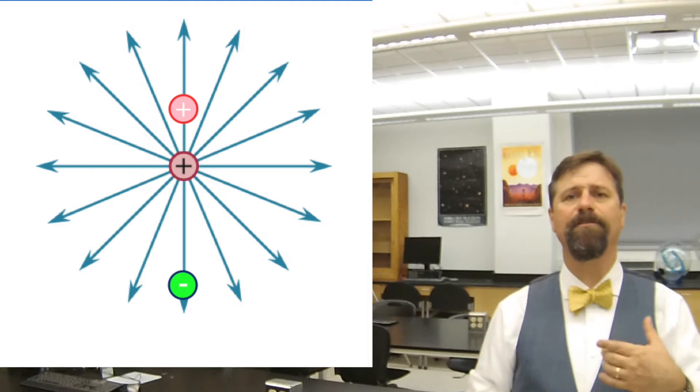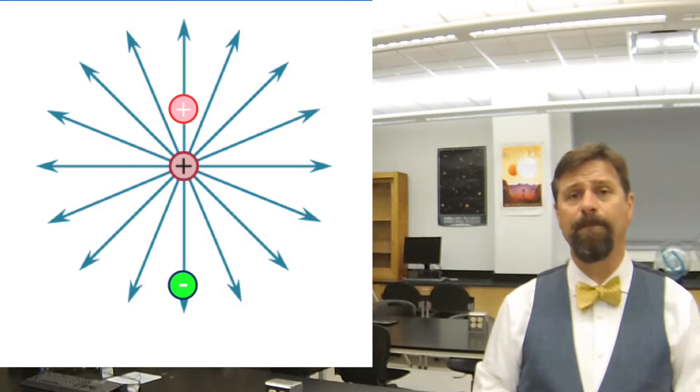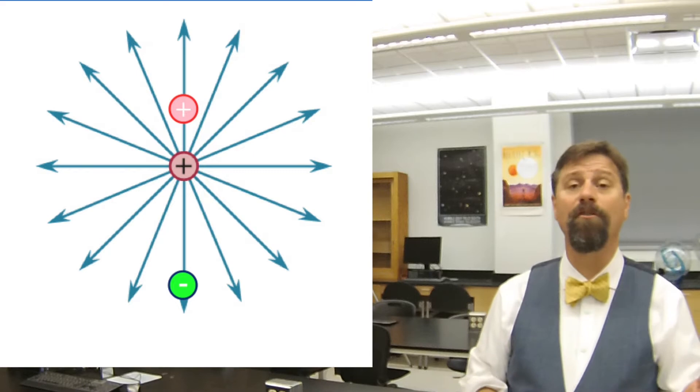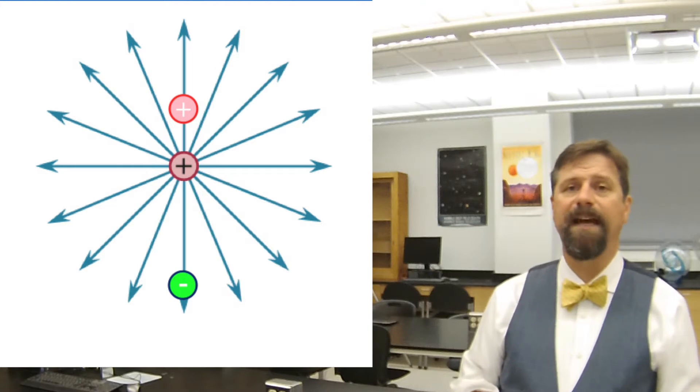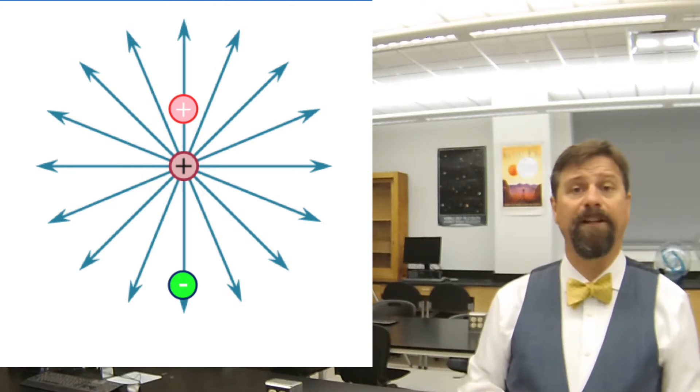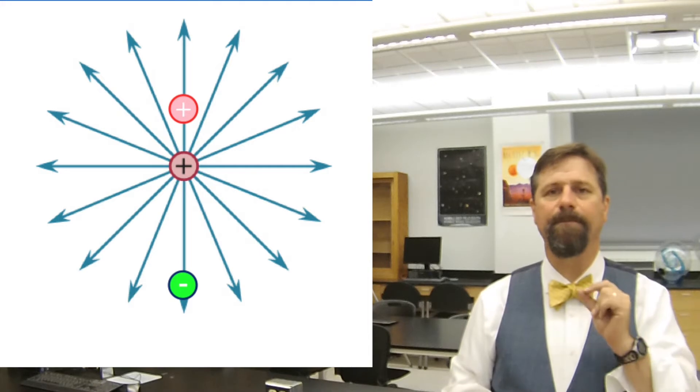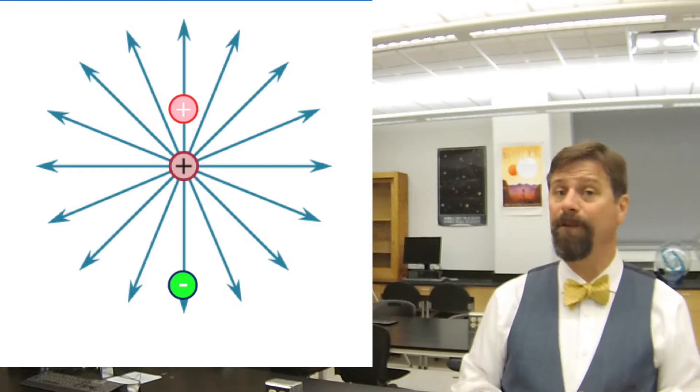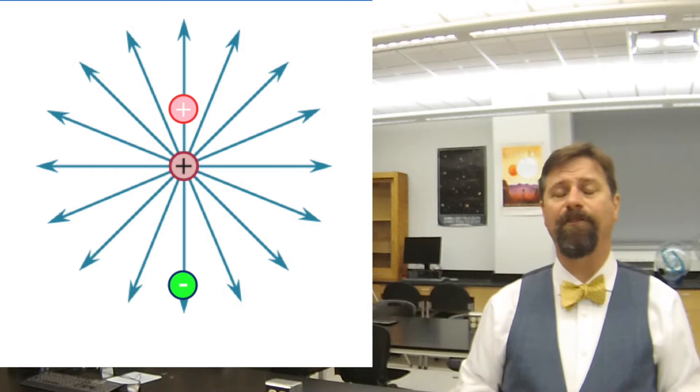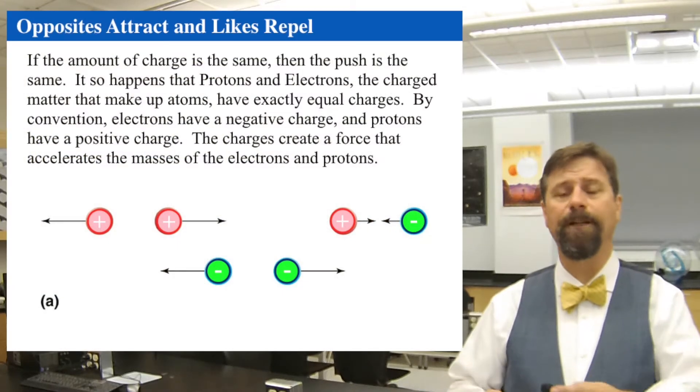If you place it closer, then the field lines are denser and that means it gets a harder push. If it's a negative charge, then it'll be attracted in the same way. They gain energy as they fall towards each other because they're pulling on each other. And the force of attraction or repulsion is decreased as they're farther and farther apart.